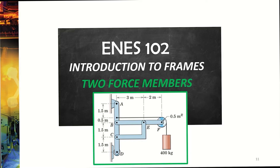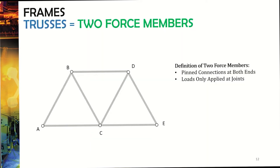Now that we've talked about pulleys, let's talk about frames. The thing that makes a frame problem is a two-force member. Two-force members are not something new — we've been working with them. On the exam 2 content we talked about trusses, and trusses are filled with two-force members. The definition of a two-force member is that it must have pinned connections at both ends, and trusses have tons of pinned connections at pins A, B, C, D, and E.